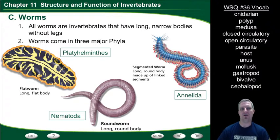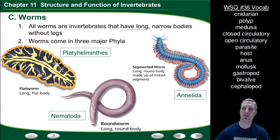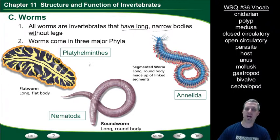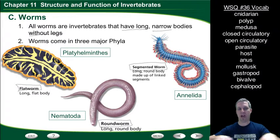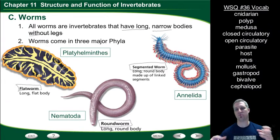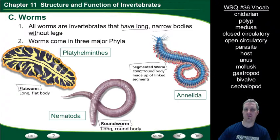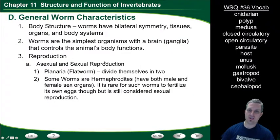The third group is worms. Worms are invertebrates with long, narrow bodies and no legs. Worms come in three major phyla: Platyhelminthes, commonly known as flatworms; Nematoda, commonly known as roundworms; and Annelida, the segmented worms. Platyhelminthes have a flat body, nematodes have a round body, and segmented worms have a round body made up of linked segments like those you can see on an earthworm.